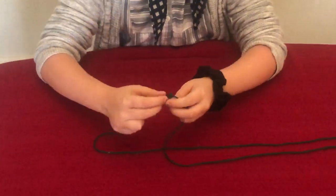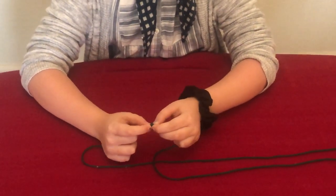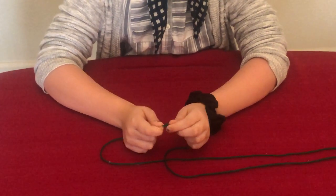So first you're going to take some string about three feet long and tie it together in a knot, and snip off the end so it does not get in your way for the string trick.